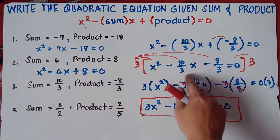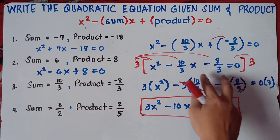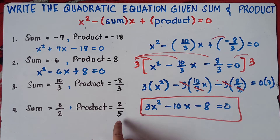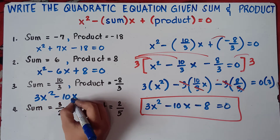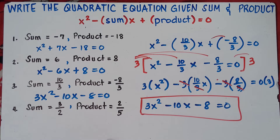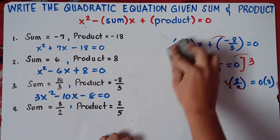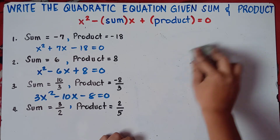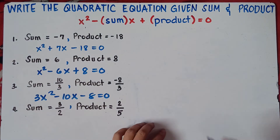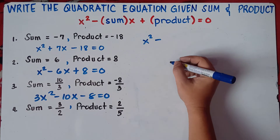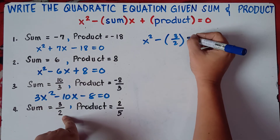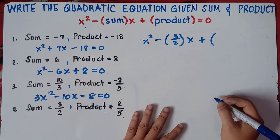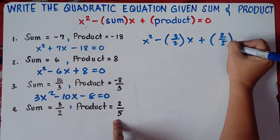They have the same denominators, which is 3 — that's why we multiply by 3. Now, what if they don't have the same denominator? Example for number 4, they don't have the same denominator. So let's explain number 4. The equation is x squared minus the sum, which is 3 over 2, times x, plus the product, which is 2 over 5, equals 0.